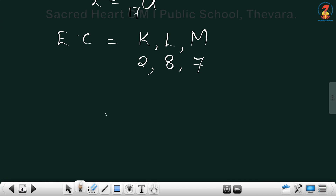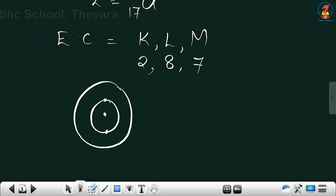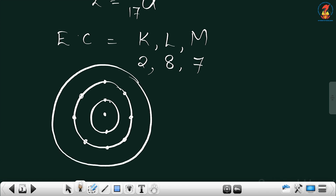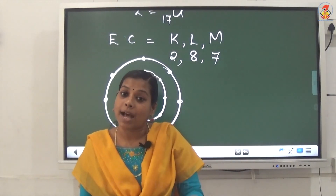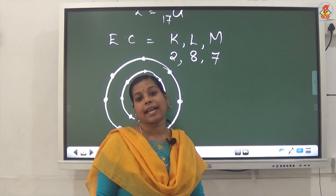Based on this we can draw the structure of chlorine. First you draw the nucleus, then the K shell with 2 electrons, the L shell with 8 electrons, and the M shell with 7 electrons. If you know the atomic number and mass number, you can calculate the number of all subatomic particles in that atom.